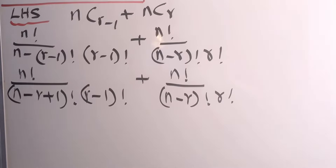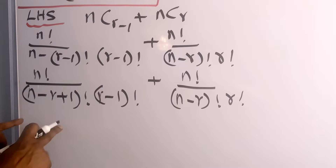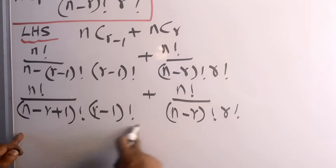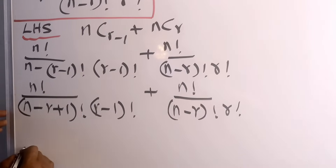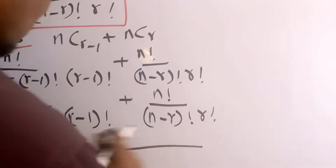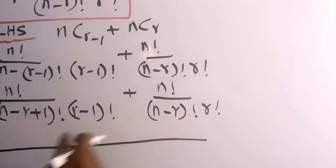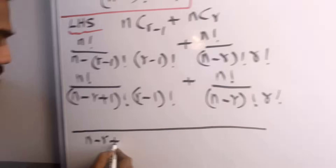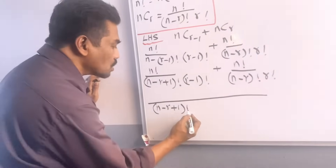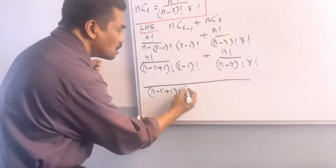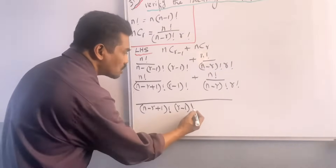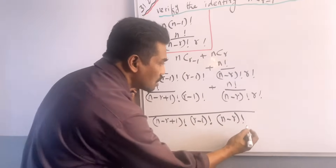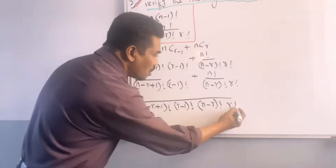Now we take the LCM. There are no common factors, so the LCM is the product of all denominator terms: (n-r+1) factorial times (r-1) factorial times (n-r) factorial times r factorial.